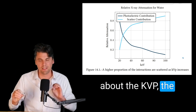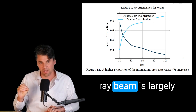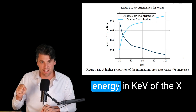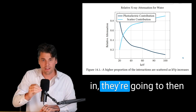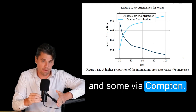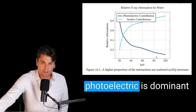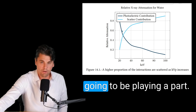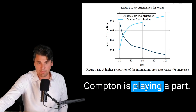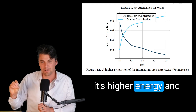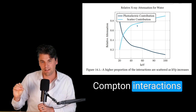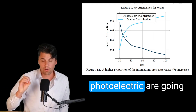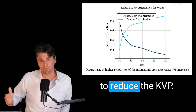First, let's talk about the kVp, the kilovolt potential. The energy of your x-ray beam is largely determined by the kVp. Photoelectric interaction is dominant at lower energies, while Compton is dominant at higher energies. If you go to higher kVp, it's higher energy and thus more scatter, as Compton interactions take place more often. From the perspective of scatter, we'd like to reduce the kVp.